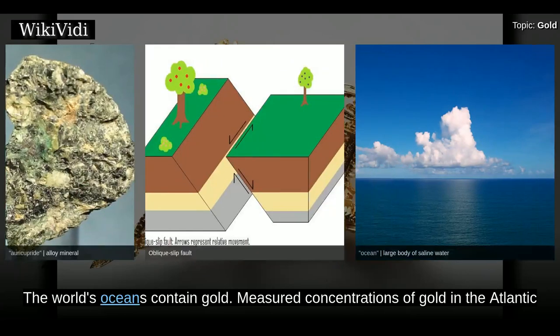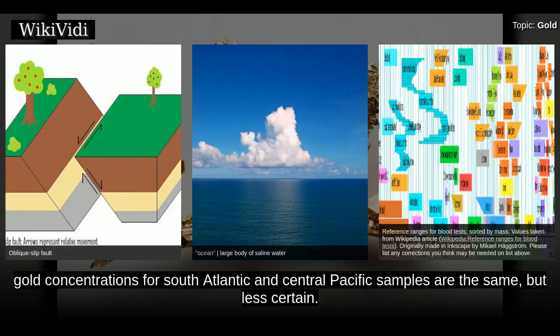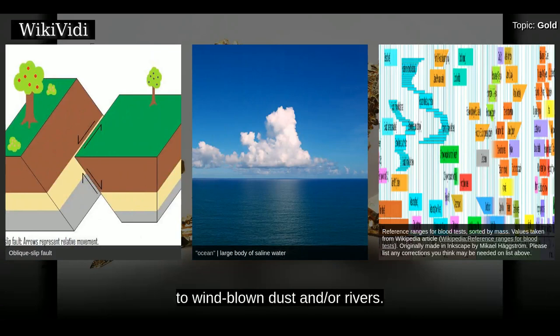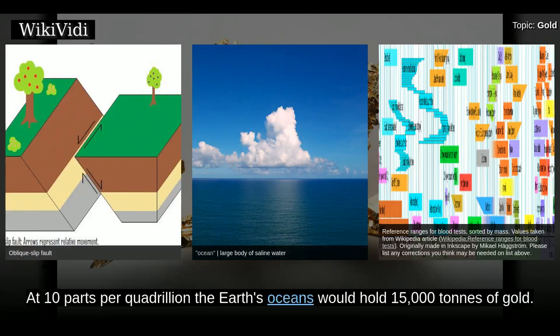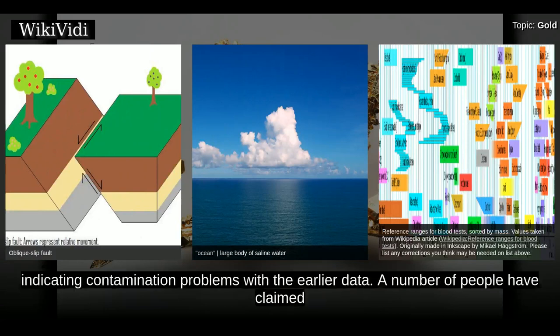The world's oceans contain gold. Measured concentrations of gold in the Atlantic and Northeast Pacific are 50–150 femtomoles per liter, or 10–30 parts per quadrillion. In general, gold concentrations for South Atlantic and Central Pacific samples are similar but less certain. Mediterranean deep waters contain slightly higher concentrations of gold, attributed to windblown dust and/or rivers. At 10 parts per quadrillion, the Earth's oceans would hold 15,000 tons of gold. These figures are three orders of magnitude less than reported in the literature prior to 1988, indicating contamination problems with the earlier data.